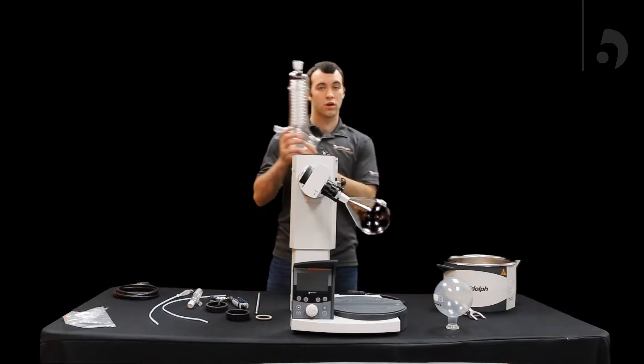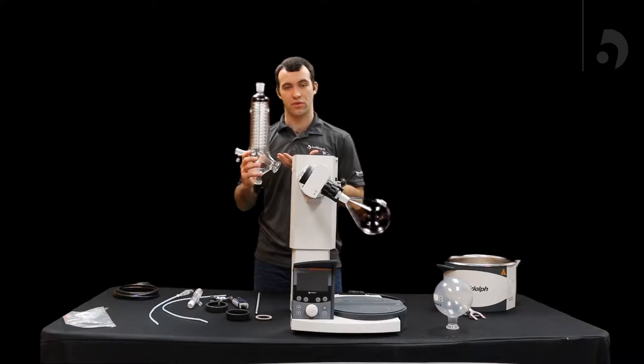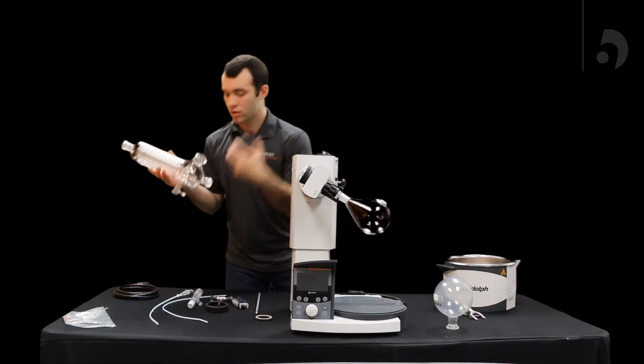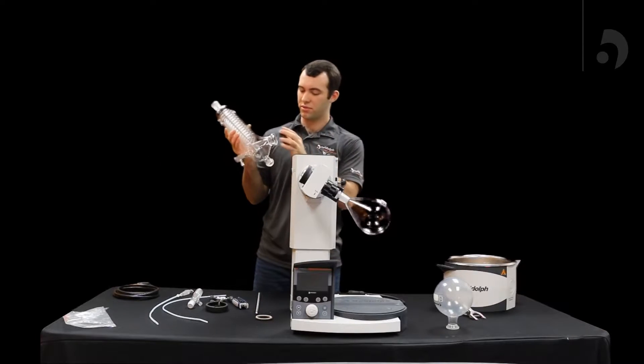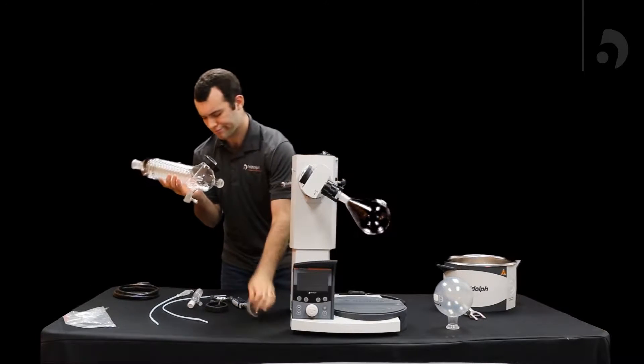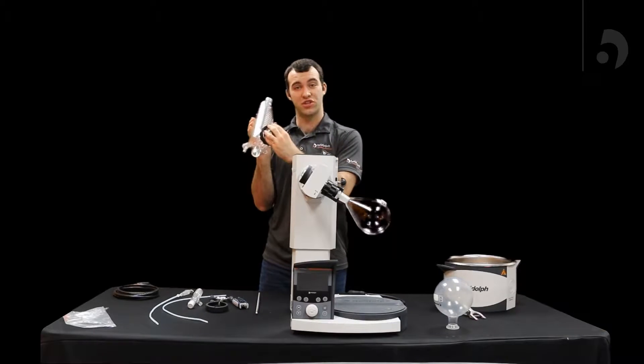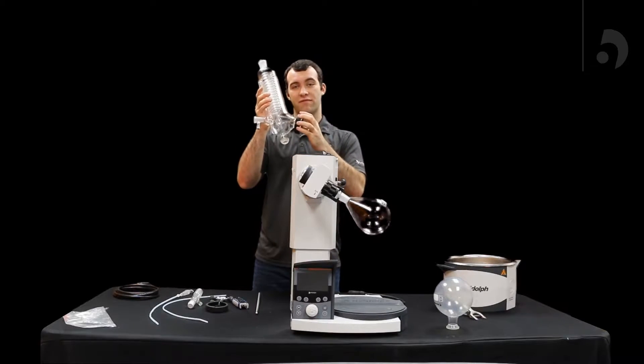And then grab your condenser, in this case it's a G3. Grab your screwing clamp, put that over there first, followed by tension spring, to prevent this from falling off.